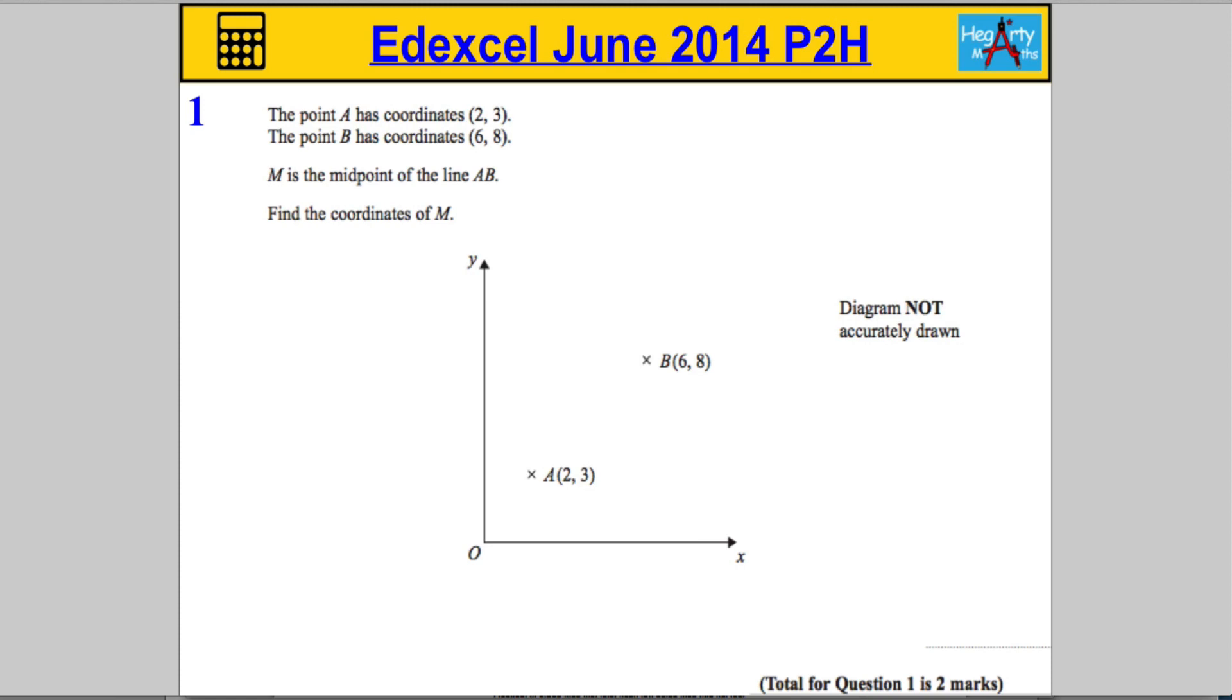Okay, so for question one, we're told that the point A has coordinates 2, 3, and B has coordinates 6, 8. M is the midpoint of the line AB, and we're asked to find the coordinates of M.